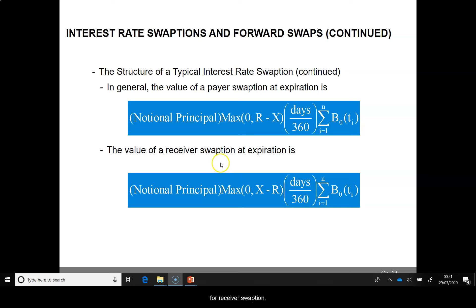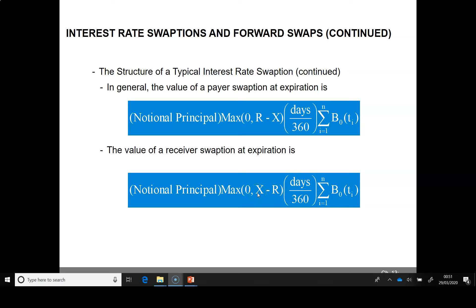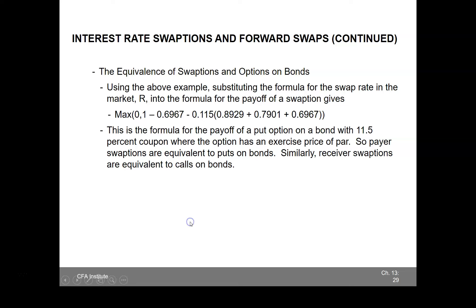For a receiver swaption, the only difference is in the way the payoff is calculated. The payoff here is X minus R — that is the exercise rate minus the swap rate. A payer swaption is equivalent to a put option on a bond, and a receiver swaption is equivalent to a call option on a bond.